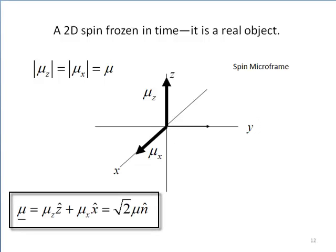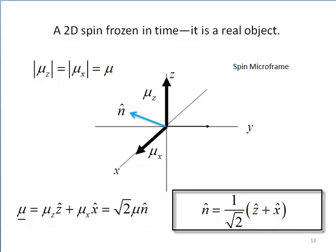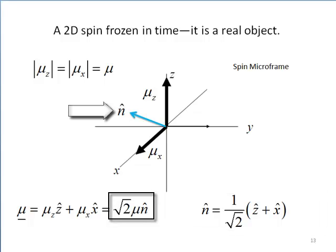So the total magnetic moment of a two-dimensional spin is given by the vector sum. The unit vector bisects the spin microframe and gives the magnetic moment as the square root of two greater than the usual spin one-half lying along that direction.